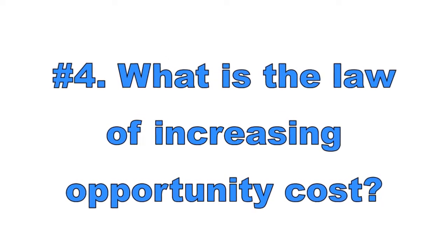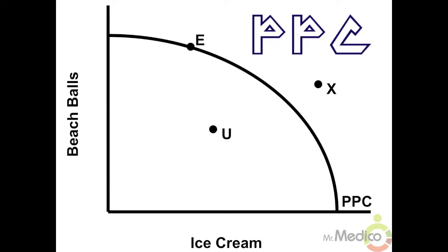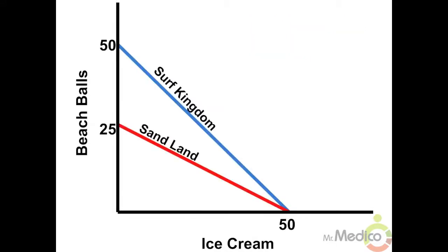Number four: What is the law of increasing opportunity cost? The law of increasing opportunity cost applies to a production possibility curve, or PPC, that is bowed outward from the origin. For an economy to produce more of one good, it must sacrifice increasing quantities of the other good. Point U inside the curve represents unemployment, point E on the curve represents full employment and productive efficiency, and point X outside the curve represents a point that is unattainable at the moment.